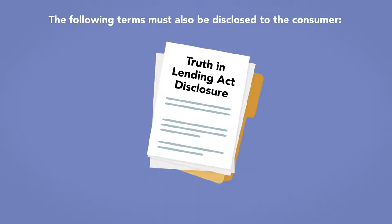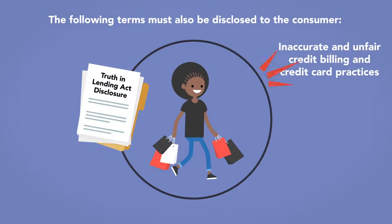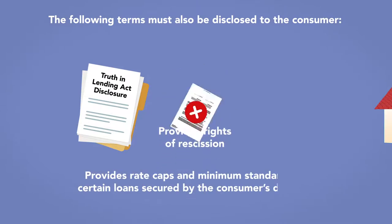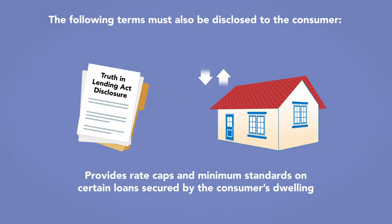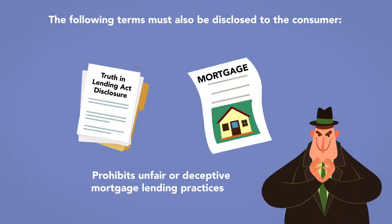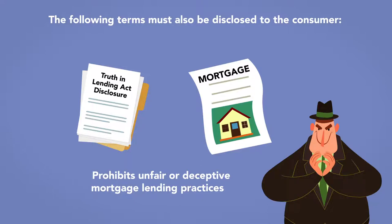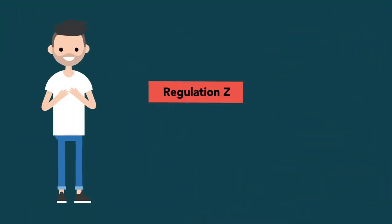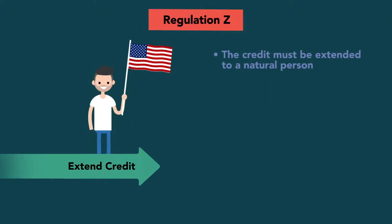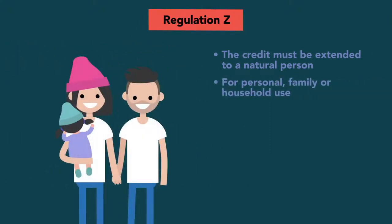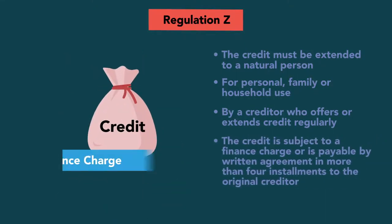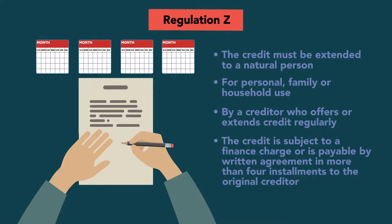In addition to providing a uniform system for disclosures, the Act protects consumers against inaccurate and unfair credit billing and credit card practices, provides rights of rescission, provides rate caps and minimum standards on certain loans secured by the consumer's dwelling, imposes limitations on home equity lines of credit, and prohibits unfair or deceptive mortgage lending practices. Regulation Z applies to individuals and businesses that offer or extend credit when the credit is extended to a natural person for personal, family, or household use, by a creditor who offers or extends credit regularly, and the credit is subject to a finance charge or is payable by written agreement in more than four installments to the original creditor.